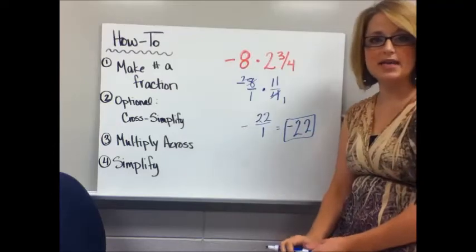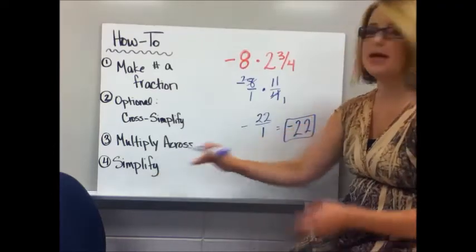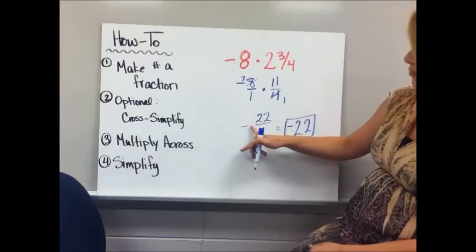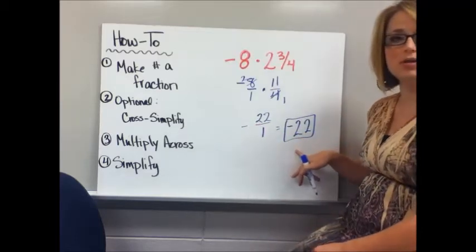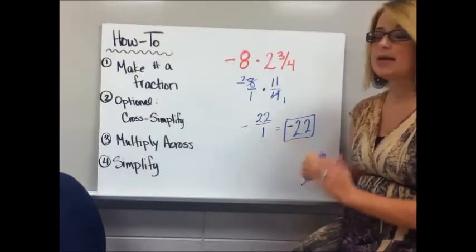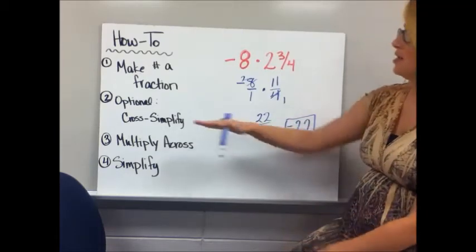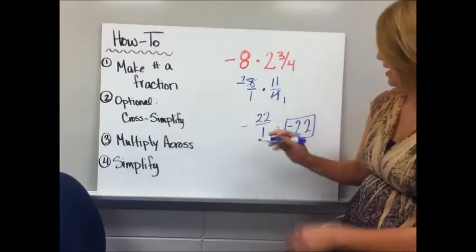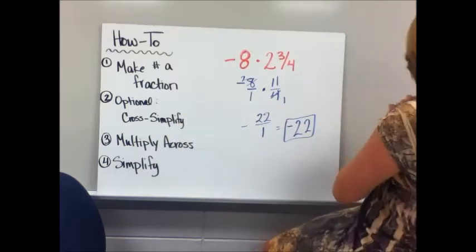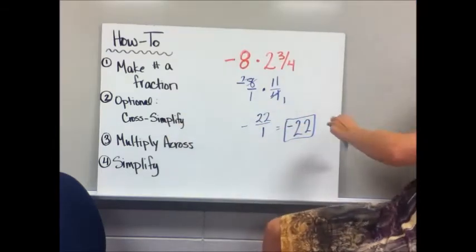Now, as you saw with adding and subtracting fractions, simplifying has two parts to it. One, that you turn any improper fractions into either a whole number or a mixed number, and second part of simplifying is reducing. You'll have to reduce if you did not do step 2, the cross-simplifying.